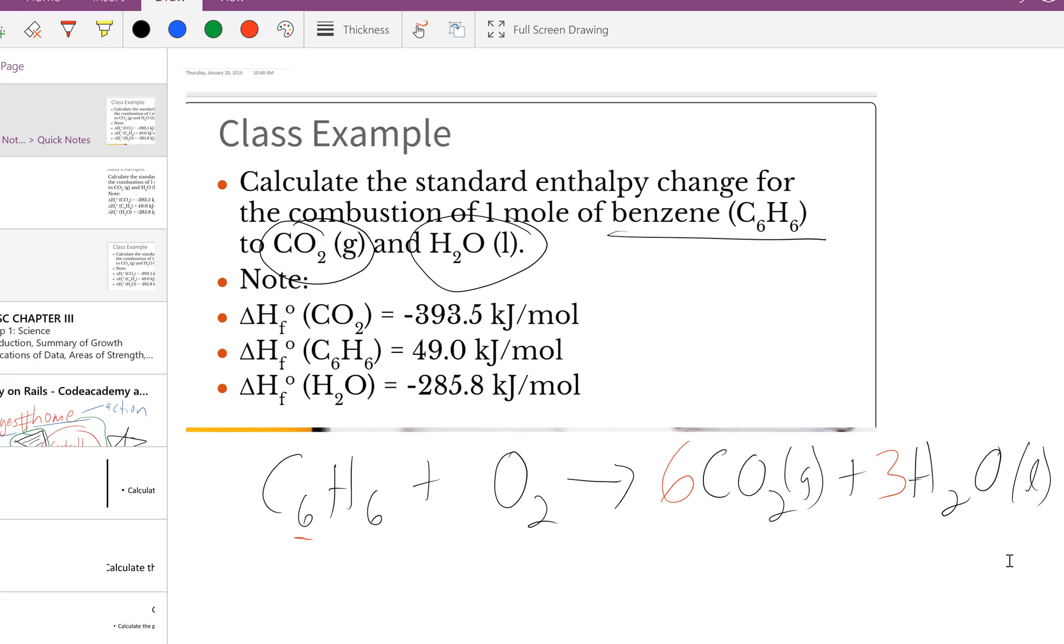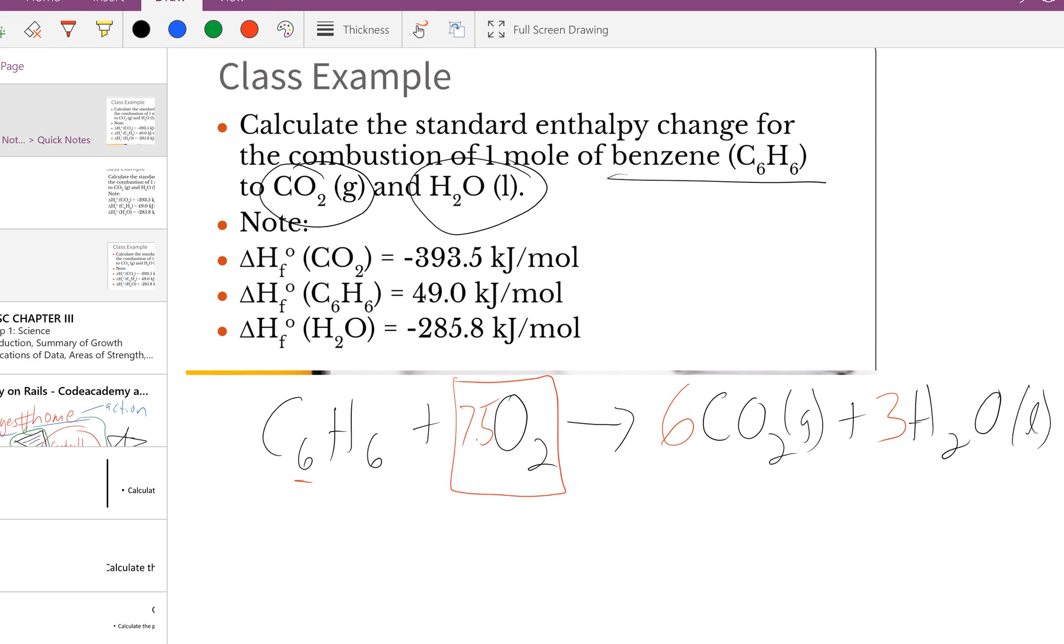Technically, this is all I need because the standard formation of any elemental substance is zero, so I don't really have to worry about that, but if I were to balance this, I believe it would be something like 7.5.